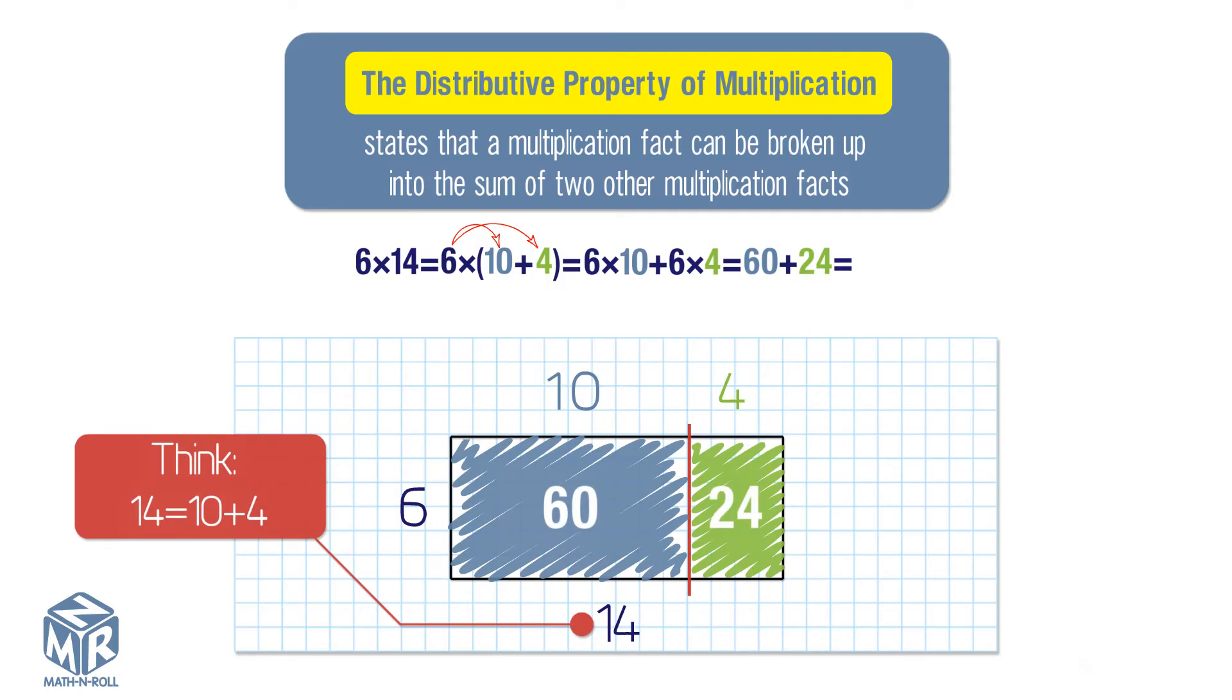Then find the sum of the products. 60 plus 24 equals 84. So 6 times 14 equals 84.